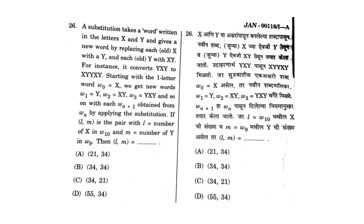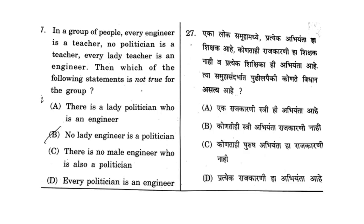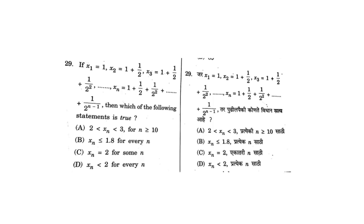Moving on to the next question: in a group of people, every engineer is a teacher and no politician is a teacher. For this question the correct answer is D — every politician is an engineer. This is the correct answer, D.